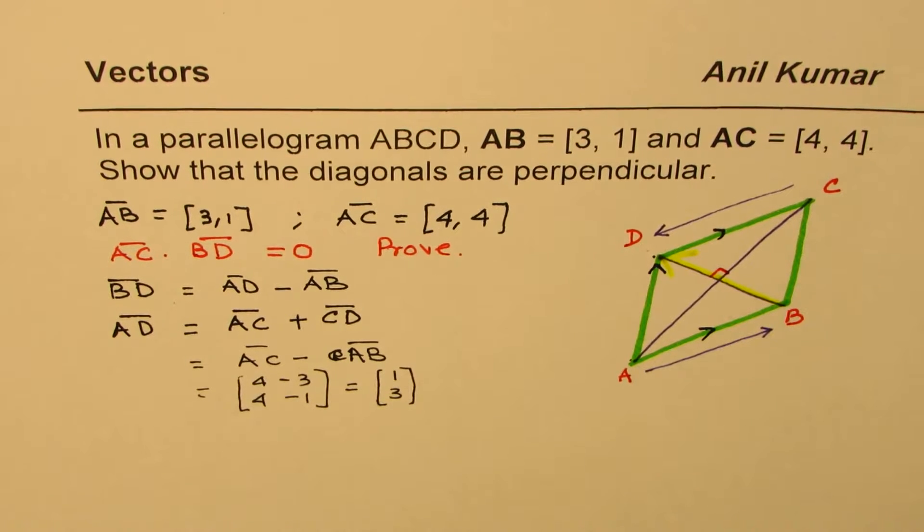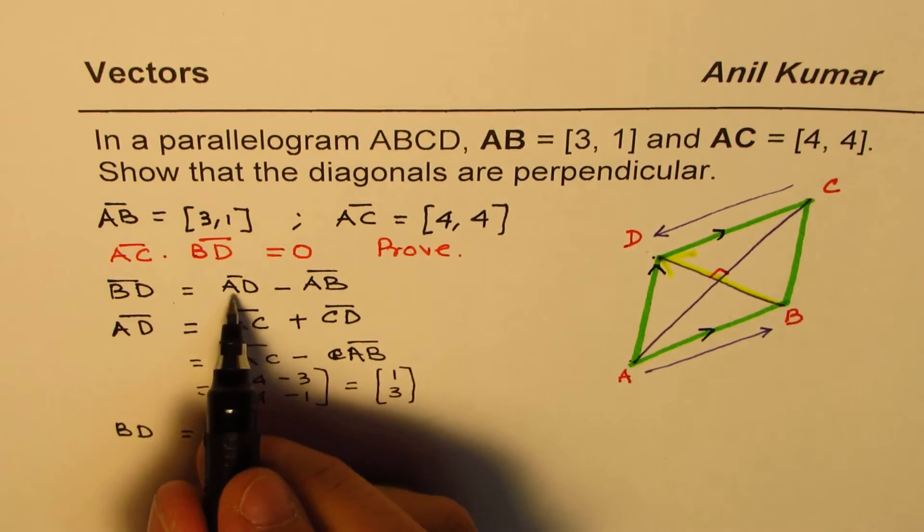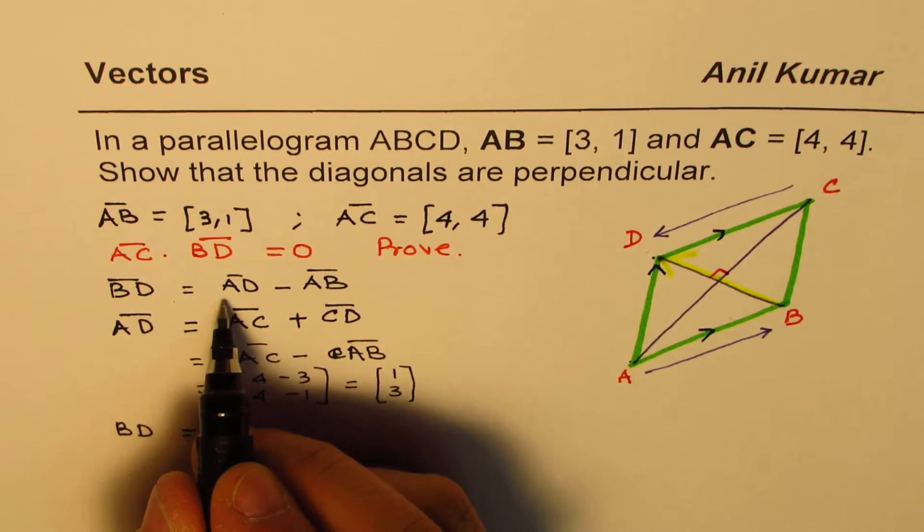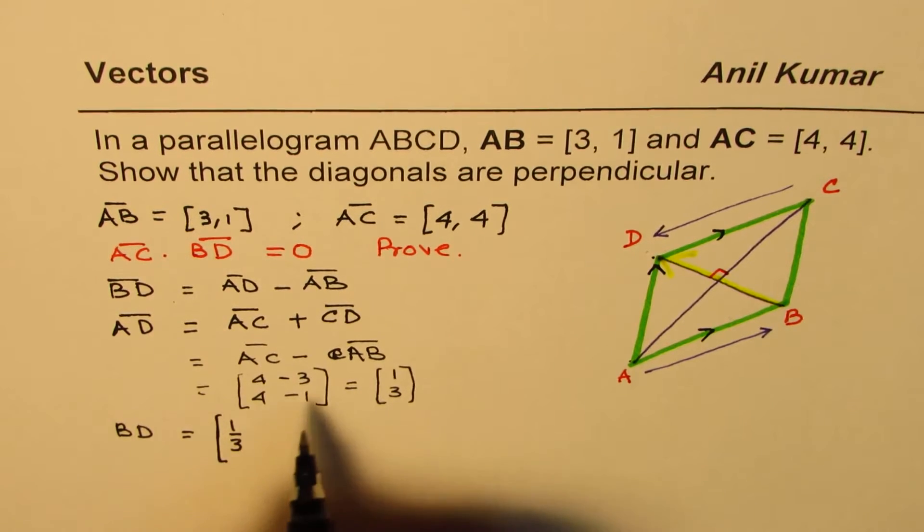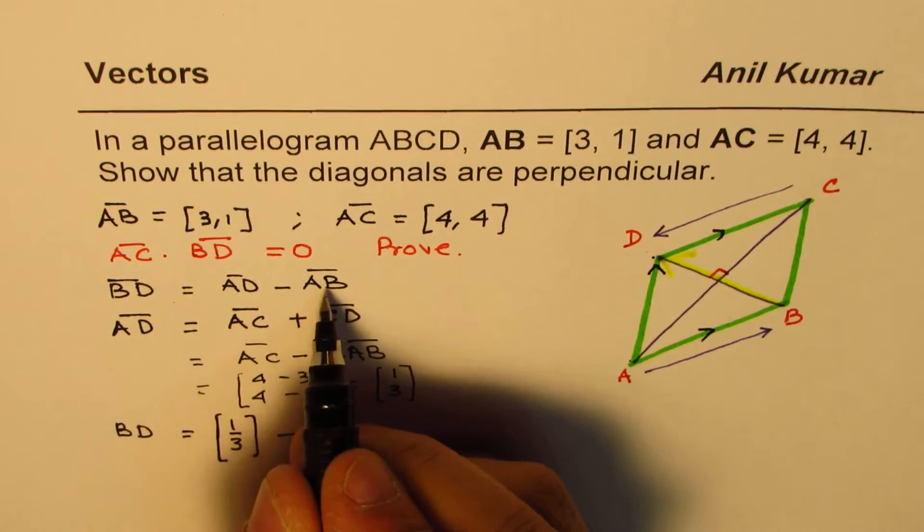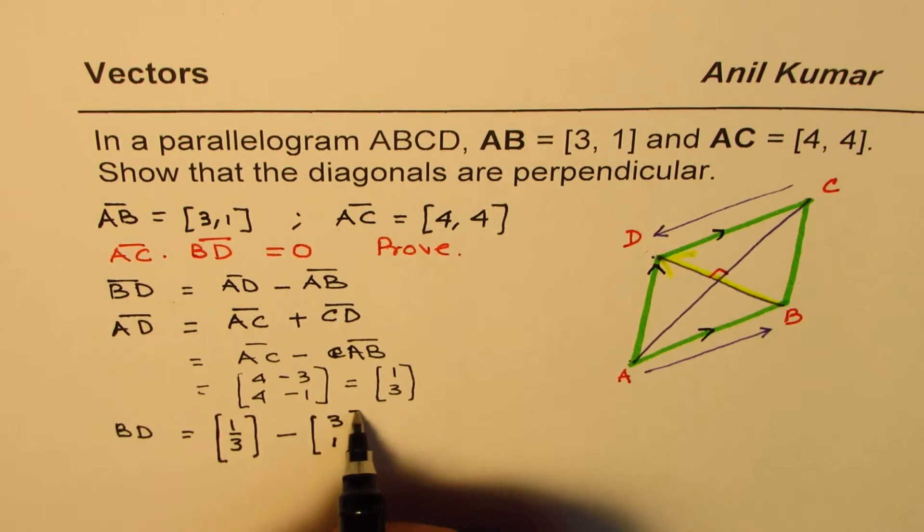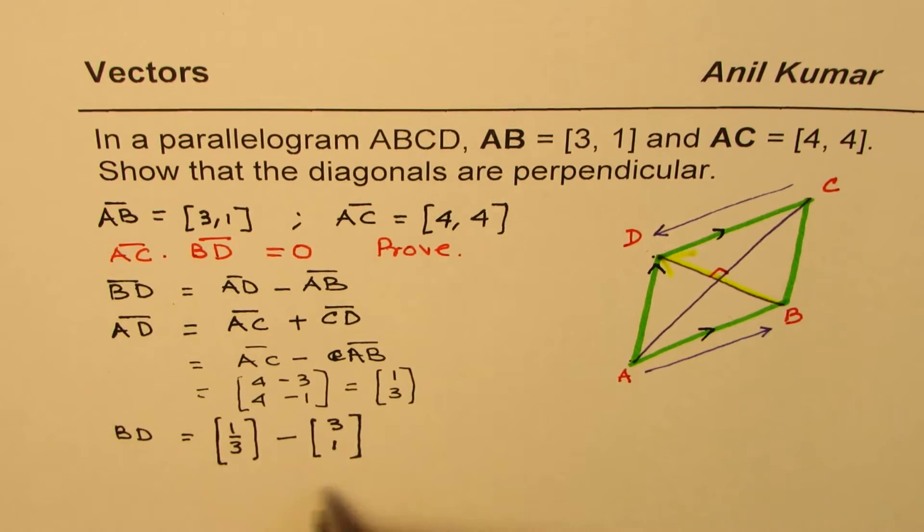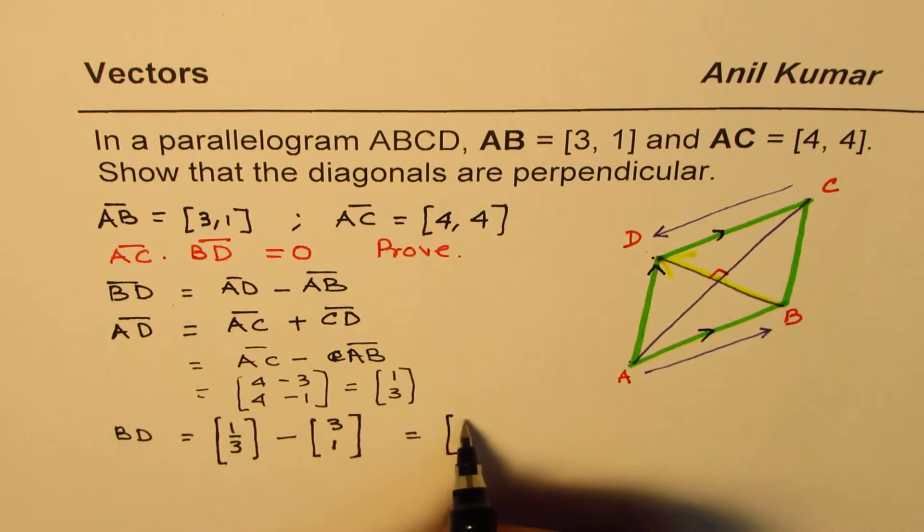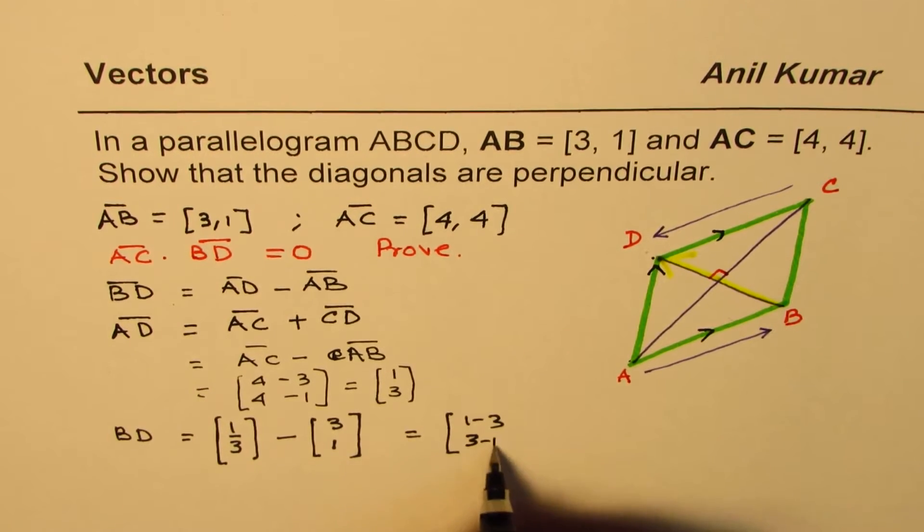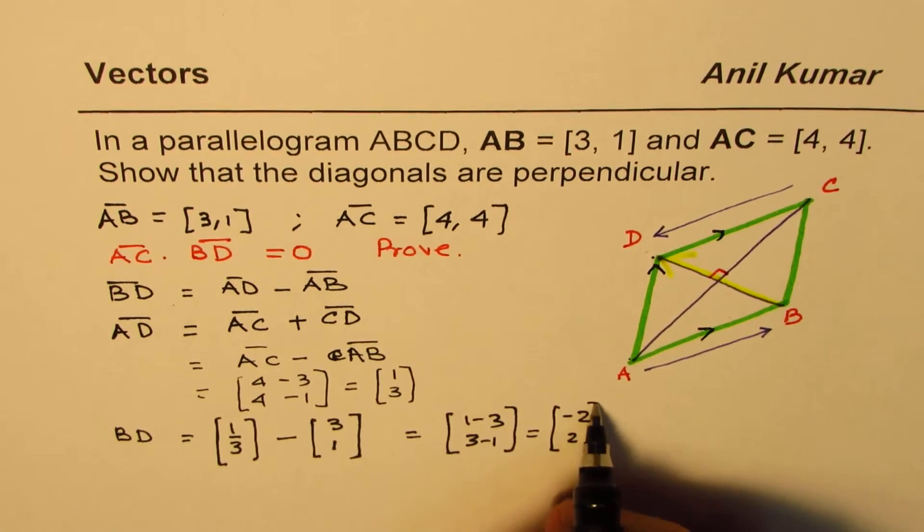So let me write what BD is. We have BD equals to AD. AD is, we just found AD is [1,3], minus AB. AB is given to us as [3,1]. So this is equal to 1 minus 3, 3 minus 1. So that is [-2,2]. So this is BD.